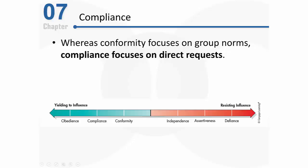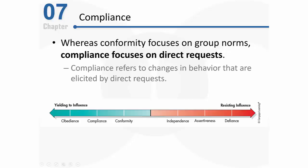With this topic of compliance we're talking about some additional social pressure. Specifically, compliance refers to changes in our actual behaviors that are a result of some direct requests that someone has made of us. If we're going to talk about changes in people's behaviors, we would need to know how someone would have acted without that additional pressure.